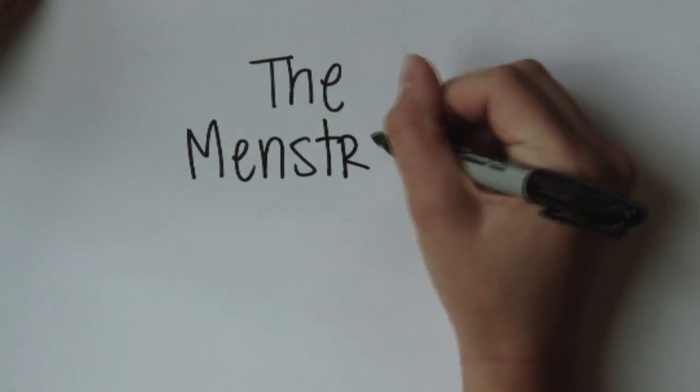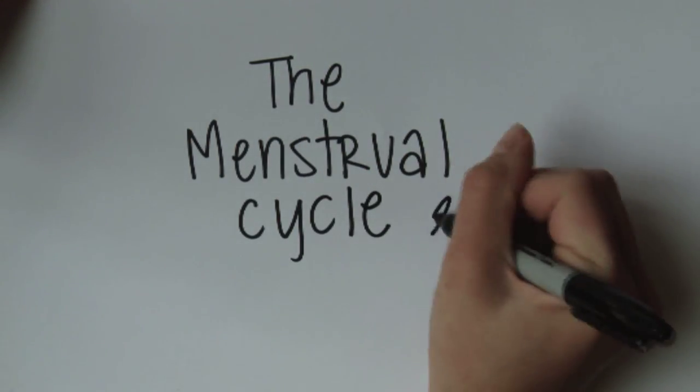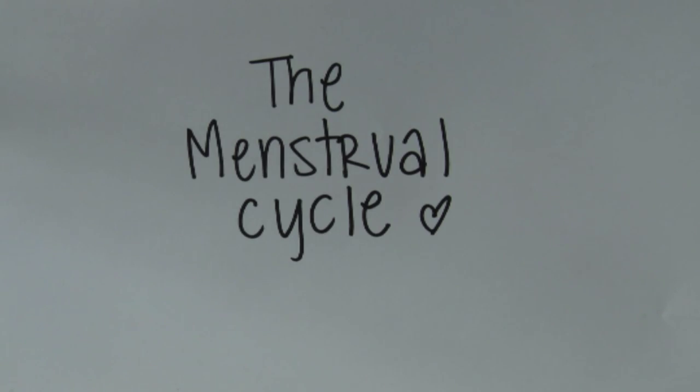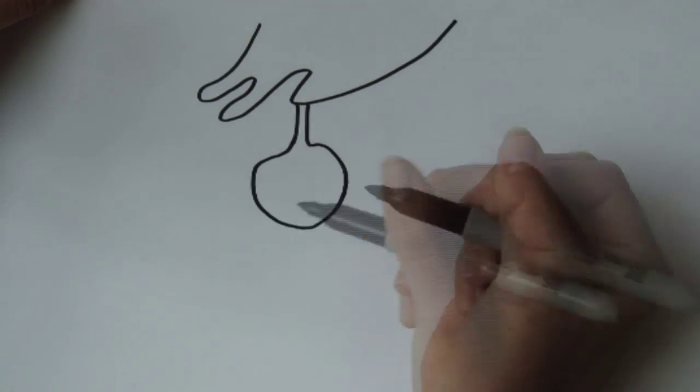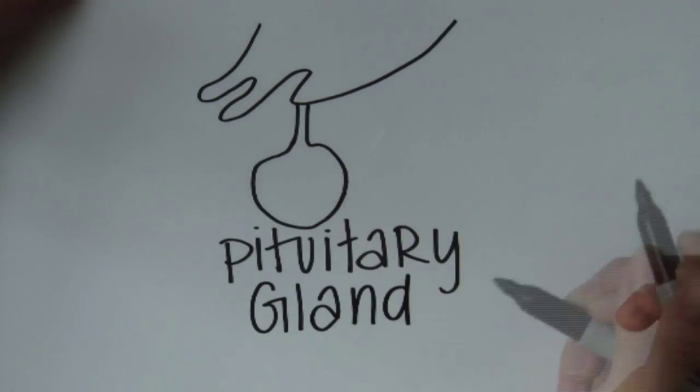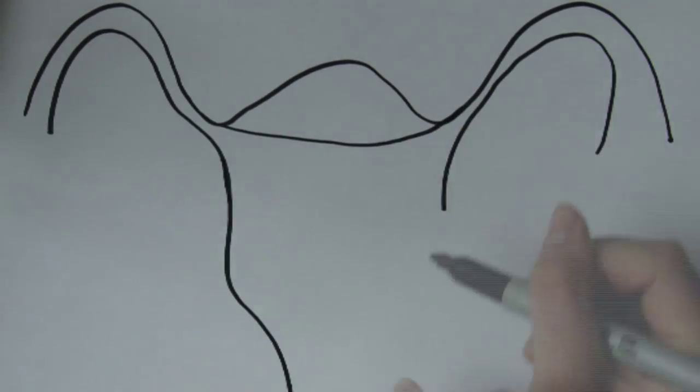In order to understand the menstrual cycle, you need to know what structures are involved and how they interact with each other. This cycle is brought about by a series of interactions between the pituitary gland, the ovaries, and the uterus.